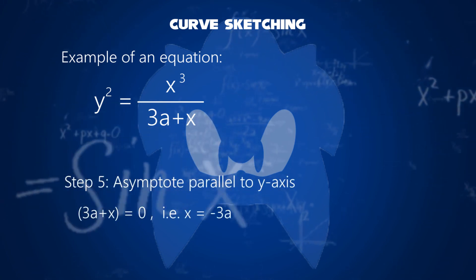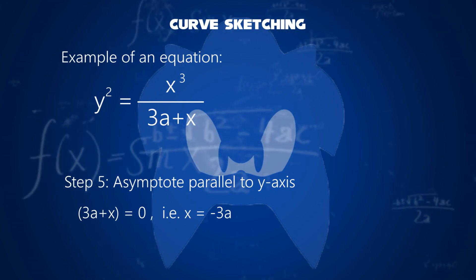Fifth step, asymptote parallel to y axis. Taking denominator 3a plus x equal to zero, then x equals minus 3a.